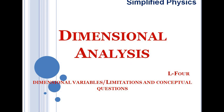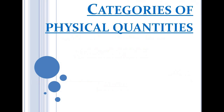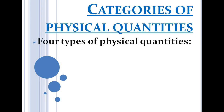Welcome to Simplified Physics. This is the fourth lecture on dimensional analysis. In this lecture we will discuss dimensional variables, limitations of dimensional analysis, and conceptual questions related to the topic. Let's begin with categories of physical quantities. On the basis of dimensions, physical quantities can be categorized into four different types.